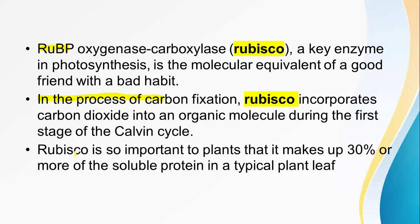Rubisco is so important to plants that it makes up 30% or more of the total protein in a typical plant leaf. Rubisco is a very important enzyme, comprising about 30% of the plant leaf protein.